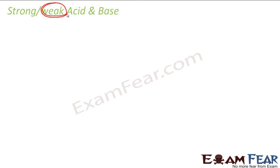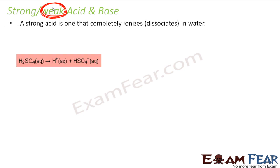Now let's understand strong and weak acids and strong and weak bases. We will focus more on weak acids and bases because that is where equilibrium applies. A strong acid is one that ionizes completely in water. For example, H2SO4 is a very strong acid — the moment you add water, it becomes H⁺ and HSO₄⁻ ions, and almost 99 to 100% of the H2SO4 is ionized.